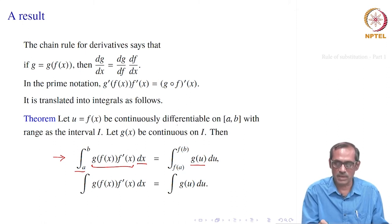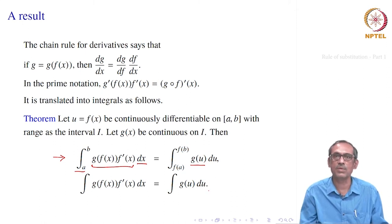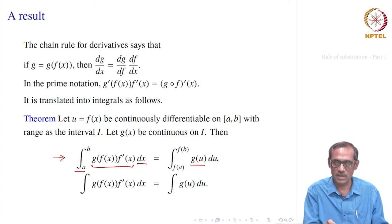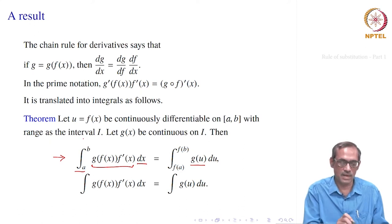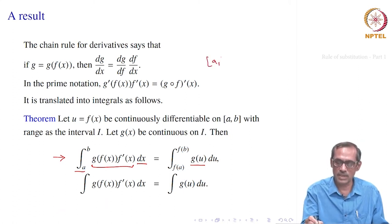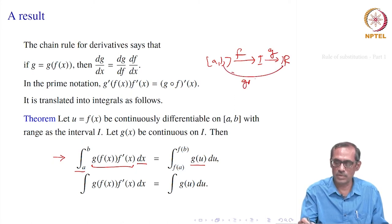Let u = f(x) be continuously differentiable on the closed interval [a, b]. Its range automatically is a closed interval. Call that range the interval I. Suppose g is also continuous on I. That means f takes [a, b] to I, and I is taken to ℝ by g, so the composite function g of f is defined from [a, b] to ℝ.